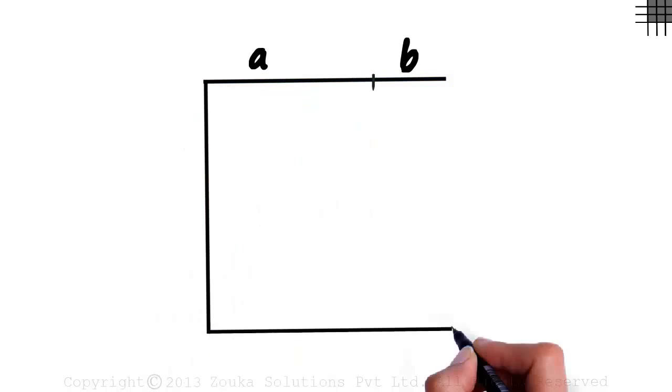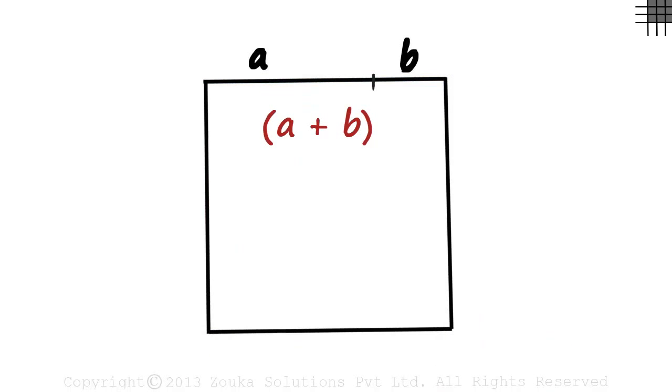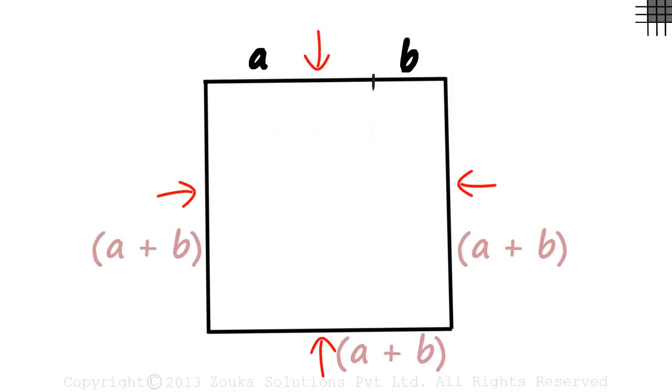Next, we complete the square with A plus B as its side. This is a square in which each length is A plus B.